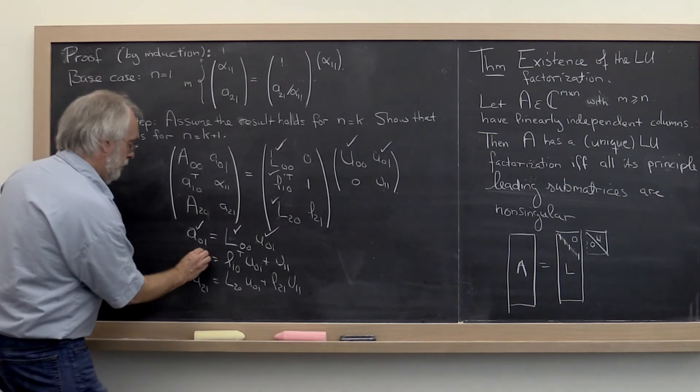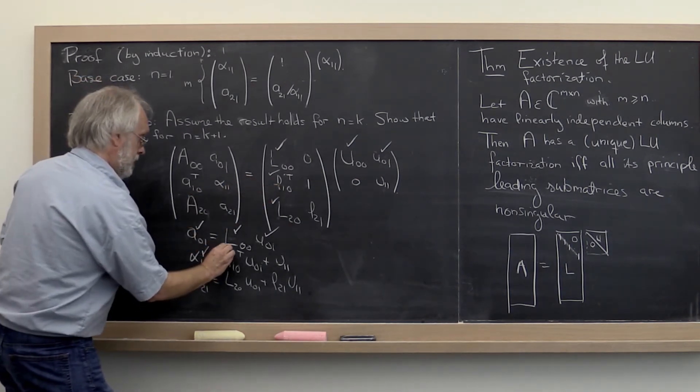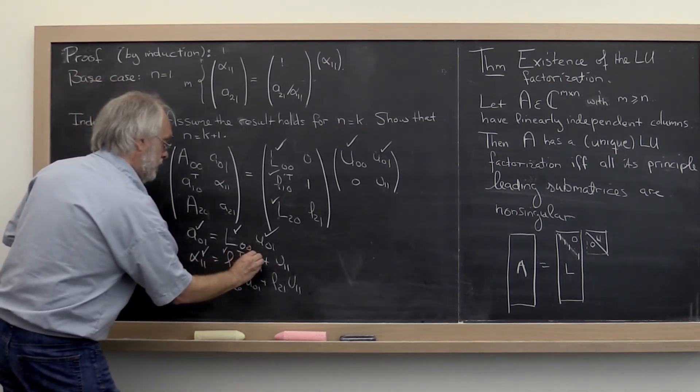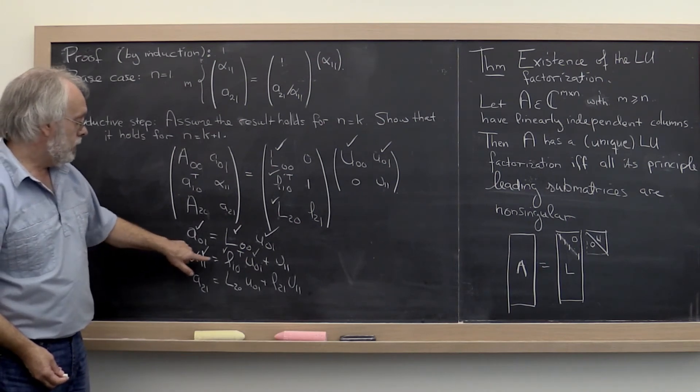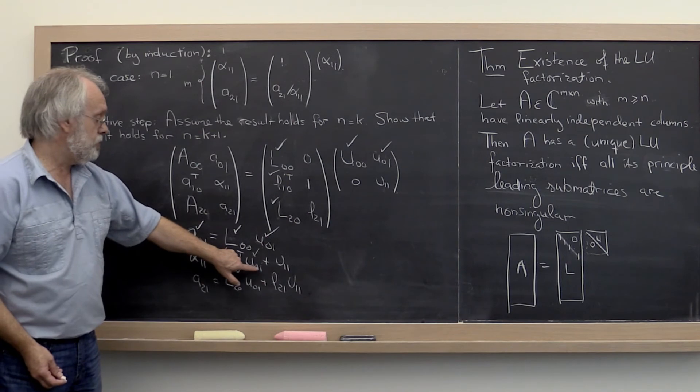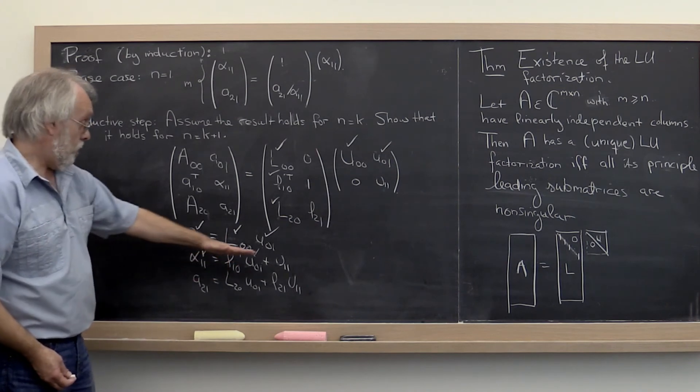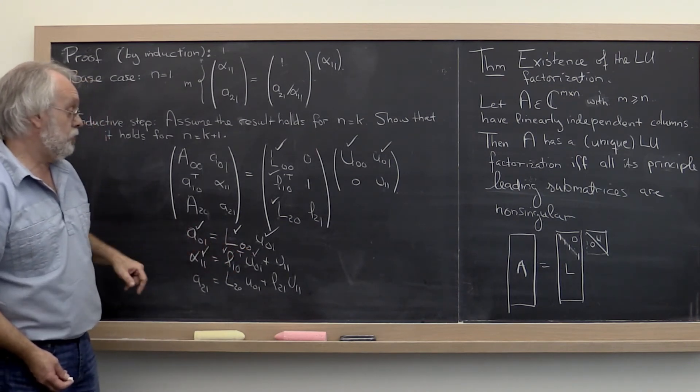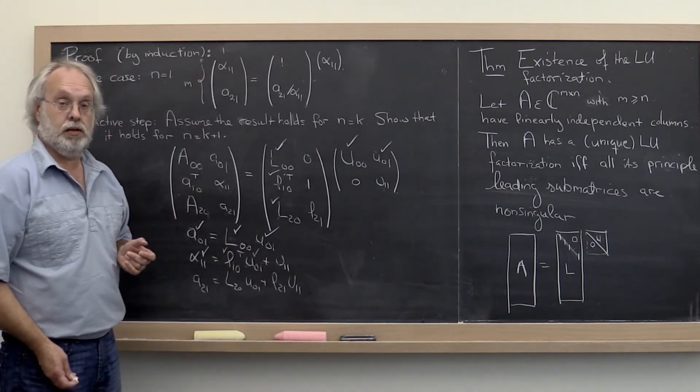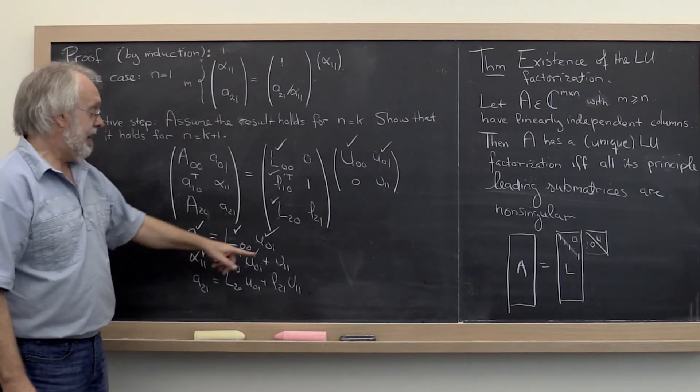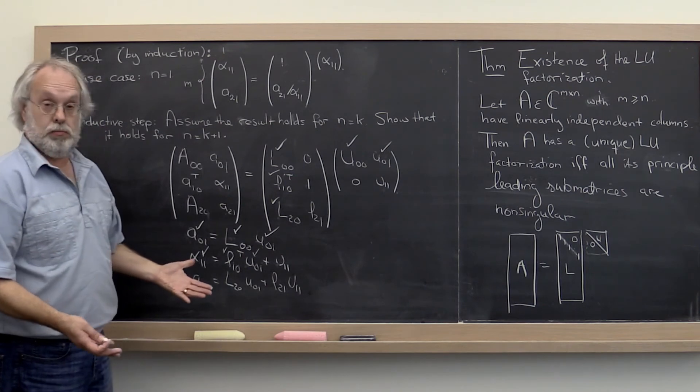Once we have that, we move on. And we know what this is. We know what that is because that's right here. And we know what U01 is. So what that means is that we can compute alpha11 minus L10 transpose times U01 to compute epsilon11. And that is just, you know, that must be the different pieces have been uniquely determined. Therefore U11 has to be unique. So then the only question becomes, can U11 be zero? Because that would be a problem.